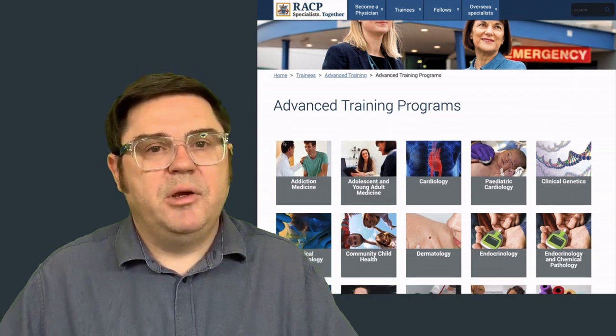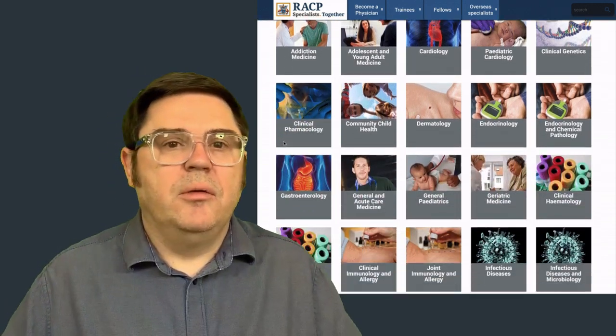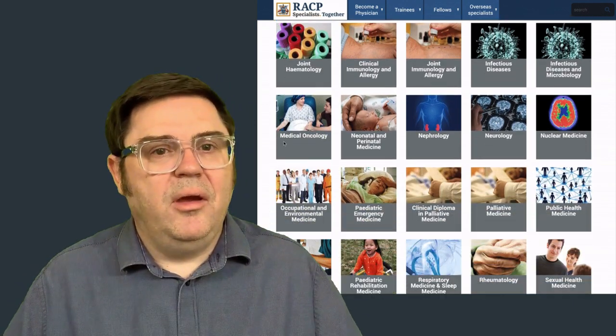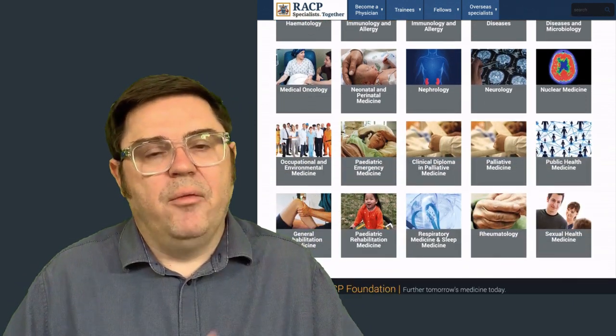For both adult medicine and pediatrics, you commence basic training with the Royal Australasian College of Physicians, after which you can choose to stay general in your advanced training or do one of many different specialties. The RACP also looks after some other smaller training programs, including occupational health and rehabilitation medicine. For radiology, you apply to the Royal Australian and New Zealand College of Radiology. This is a relatively straightforward specialty. There are really only two options, diagnostic radiology and radiotherapy.